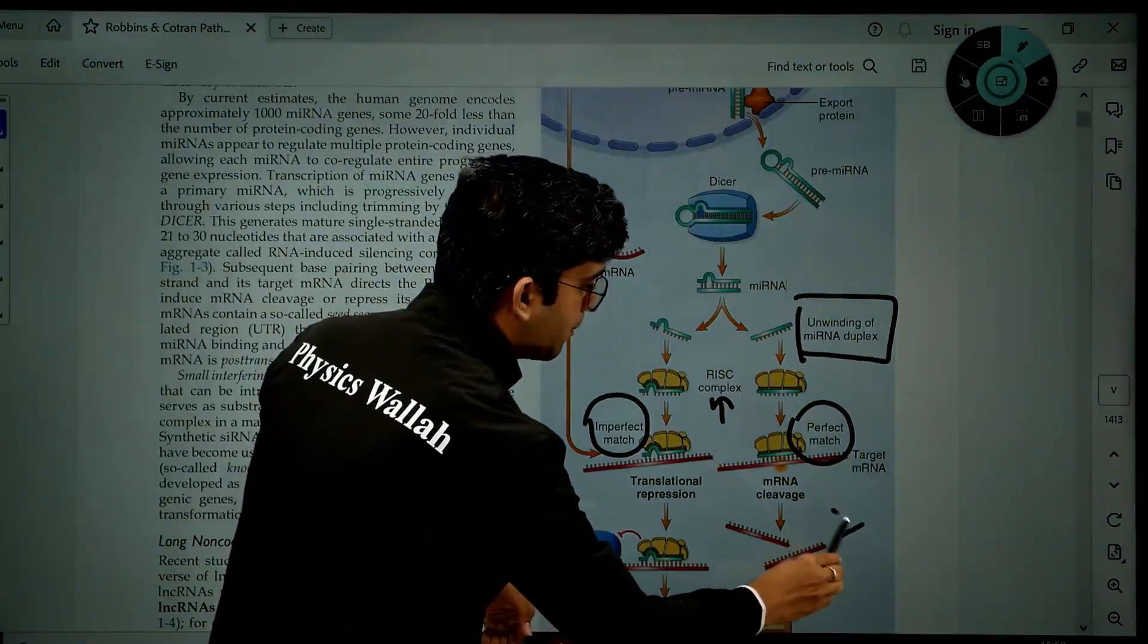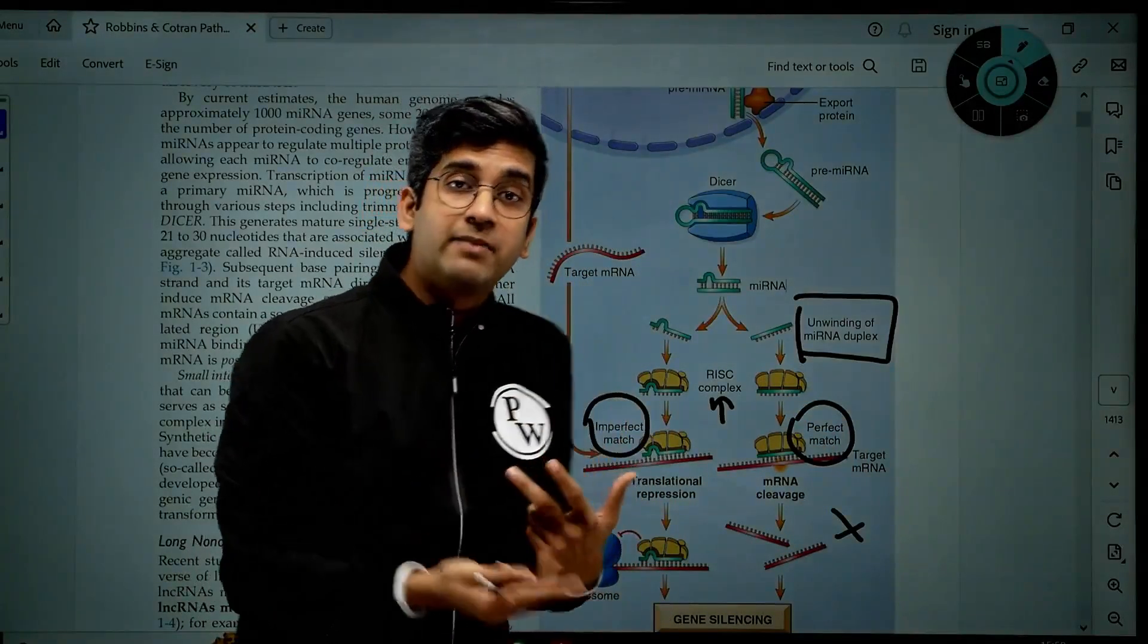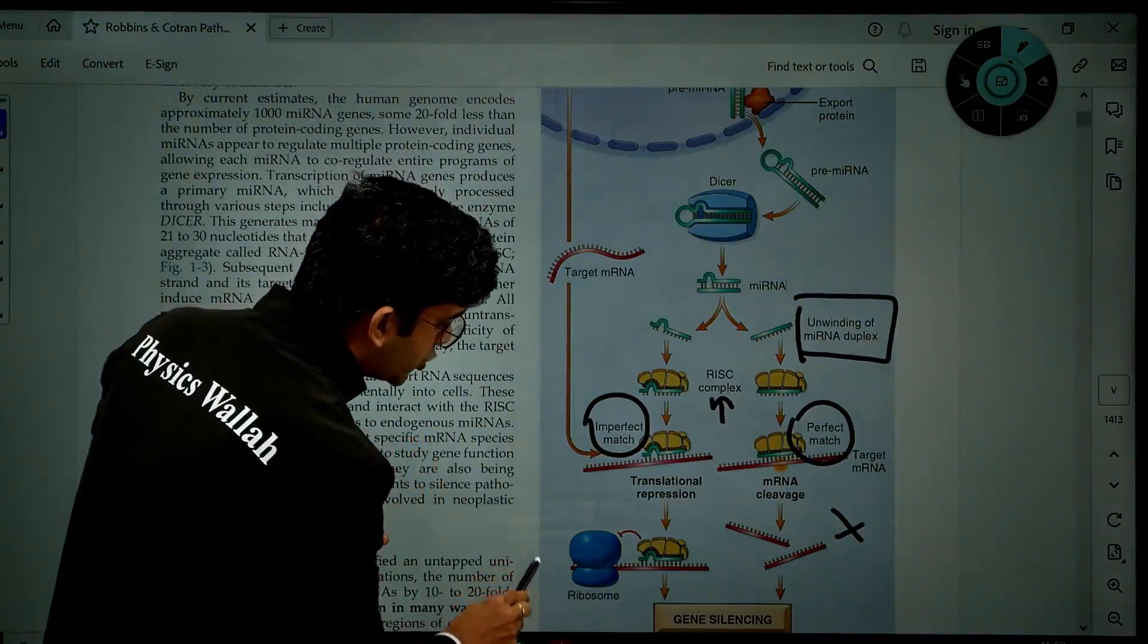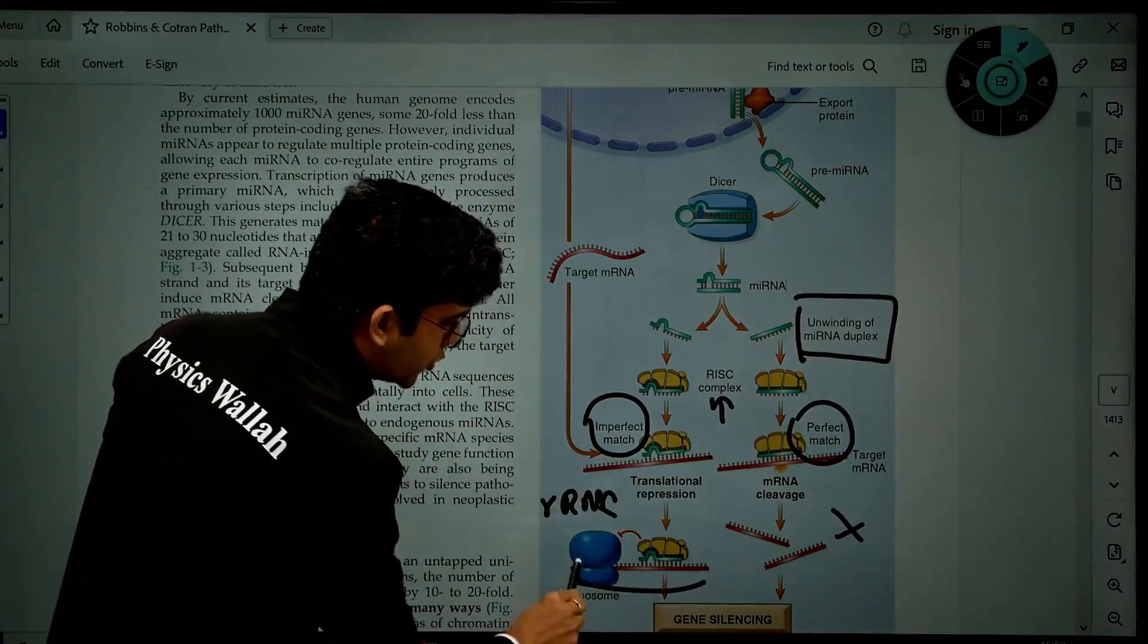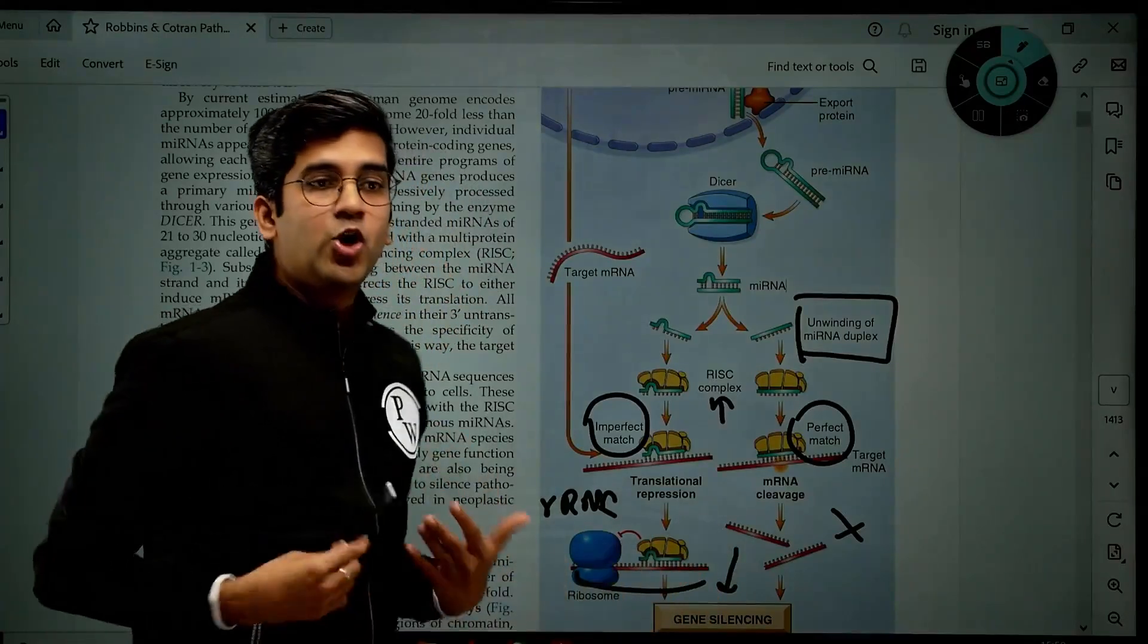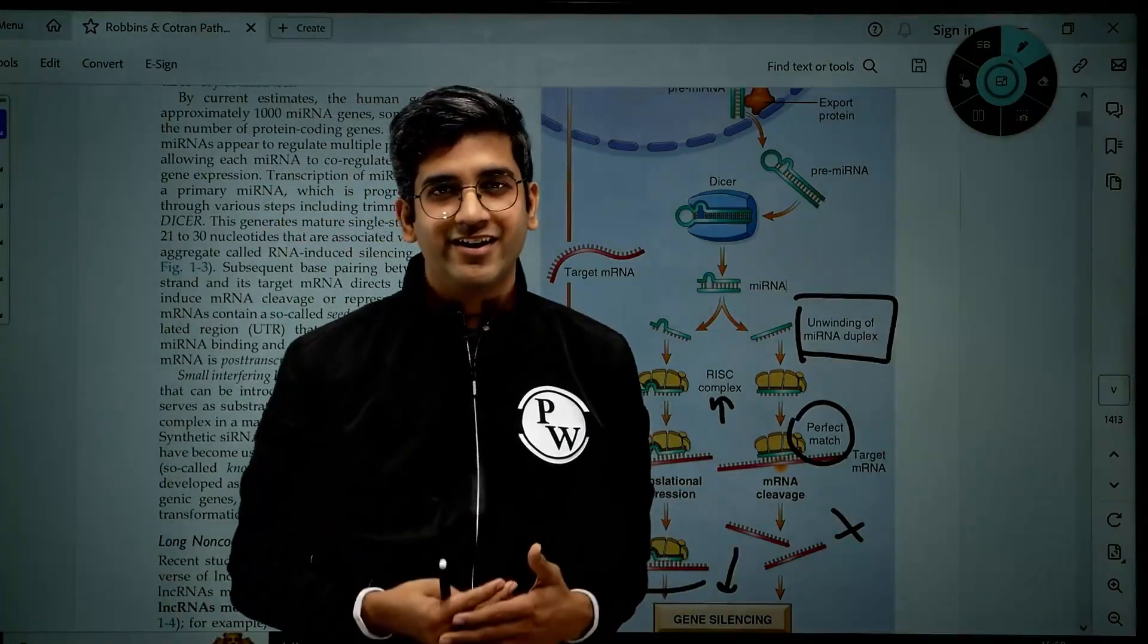If there is an imperfect match, like you can see, it will stop my ribosomal RNA from reading the protein. Ultimately, the gene's output is silenced. That is what exactly miRNA does.